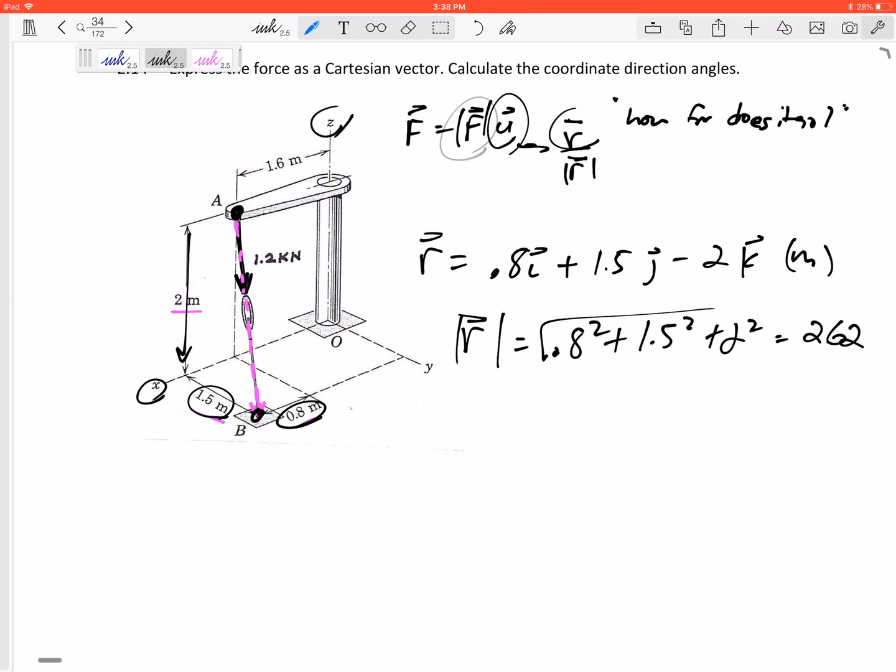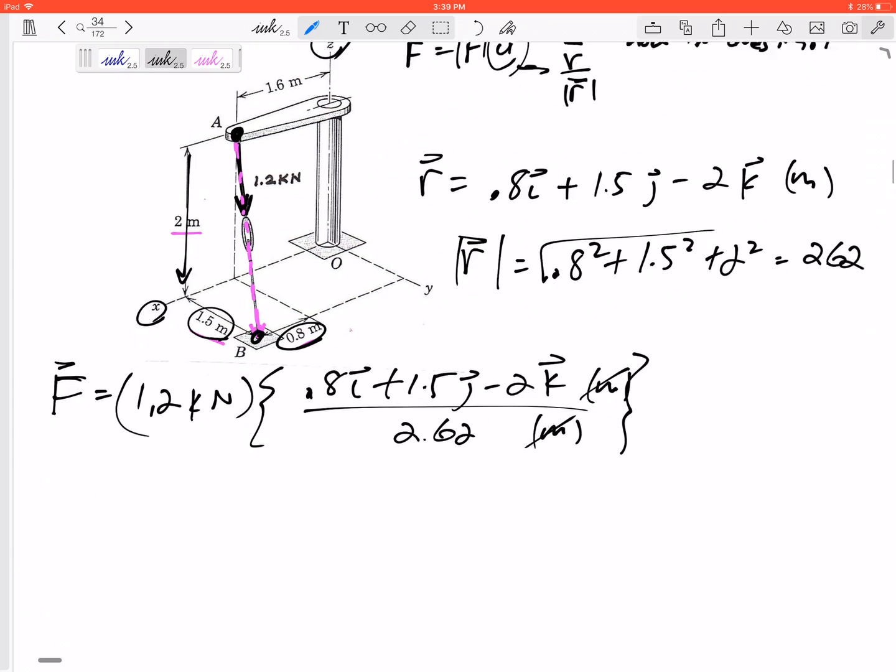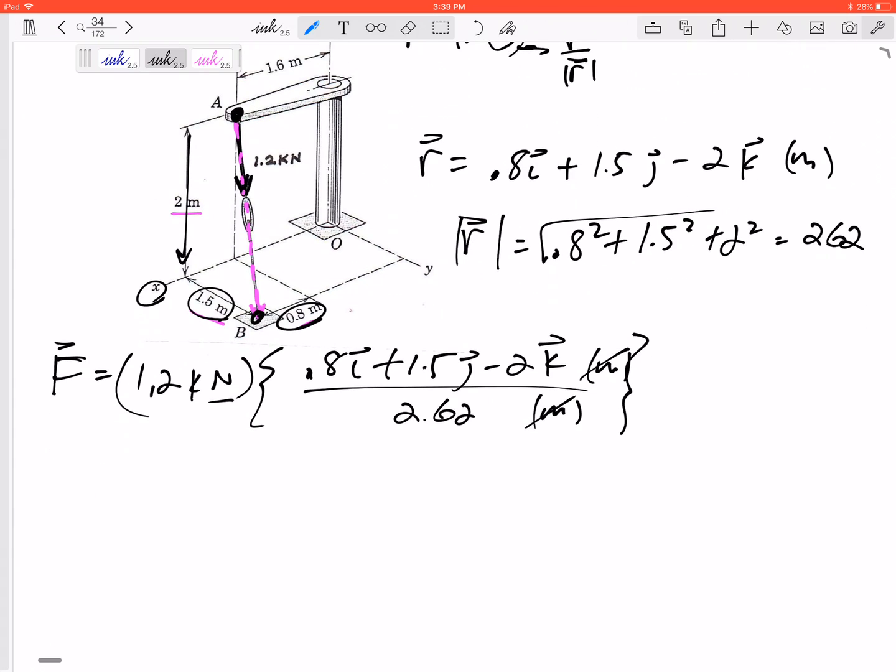So now I think I'm ready. I know the magnitude is 1.2 and now I know r over r. So let's write this in its component form. This would be 1.2 times r: 0.8i plus 1.5 in the j minus 2 in the k, divided by 2.62. This has units of meters but this also has units of meters, so they cancel out and I'm left with kilonewtons.